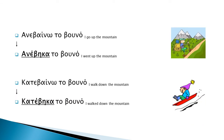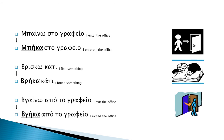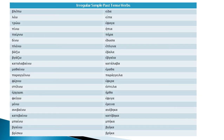Ανεβαίνω το βουνό → Ανέβηκα το βουνό. Κατεβαίνω το βουνό → Κατέβηκα το βουνό. Μπαίνω στο γραφείο → Μπήκα στο γραφείο. Βρίσκω κάτι → Βρήκα κάτι. Βγαίνω από το γραφείο → Βγήκα από το γραφείο. You should memorize these verbs.